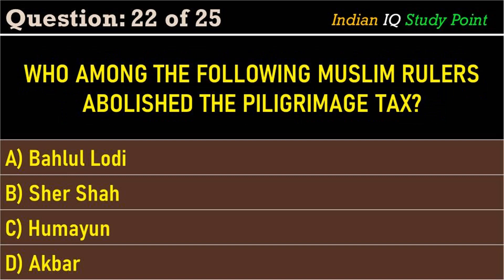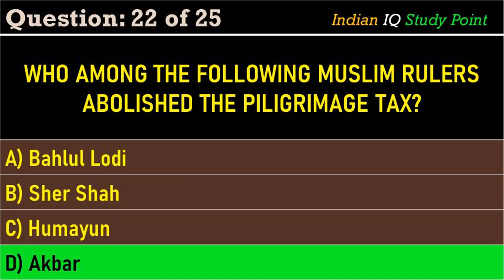Coming to the next question: who among the following Muslim rulers abolished the pilgrimage tax? Option A. Bahlul Lodi, B. Sher Shah, C. Humayun, D. Akbar. And the correct answer is Option D. Akbar.